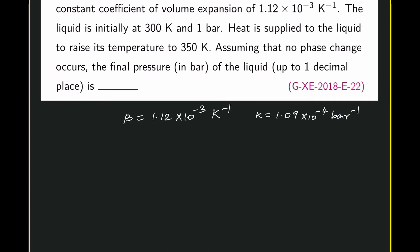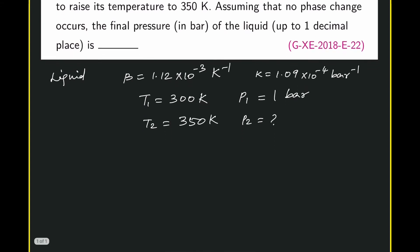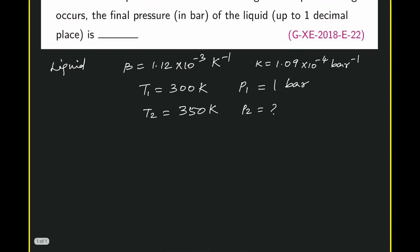The liquid is initially at 300 K, which means T₁ = 300 K and initial pressure is 1 bar. Temperature at the second final condition T₂ = 350 K. We are asked to find what is the final pressure P₂. How to find the pressure rise due to heating of a liquid?